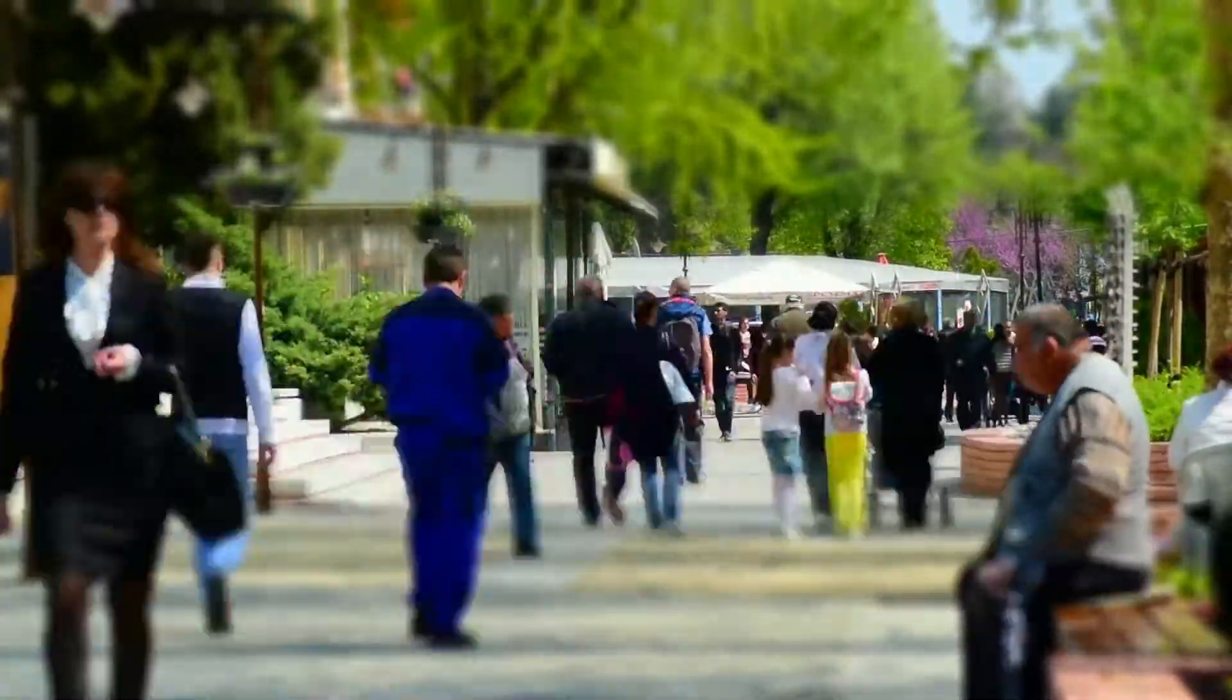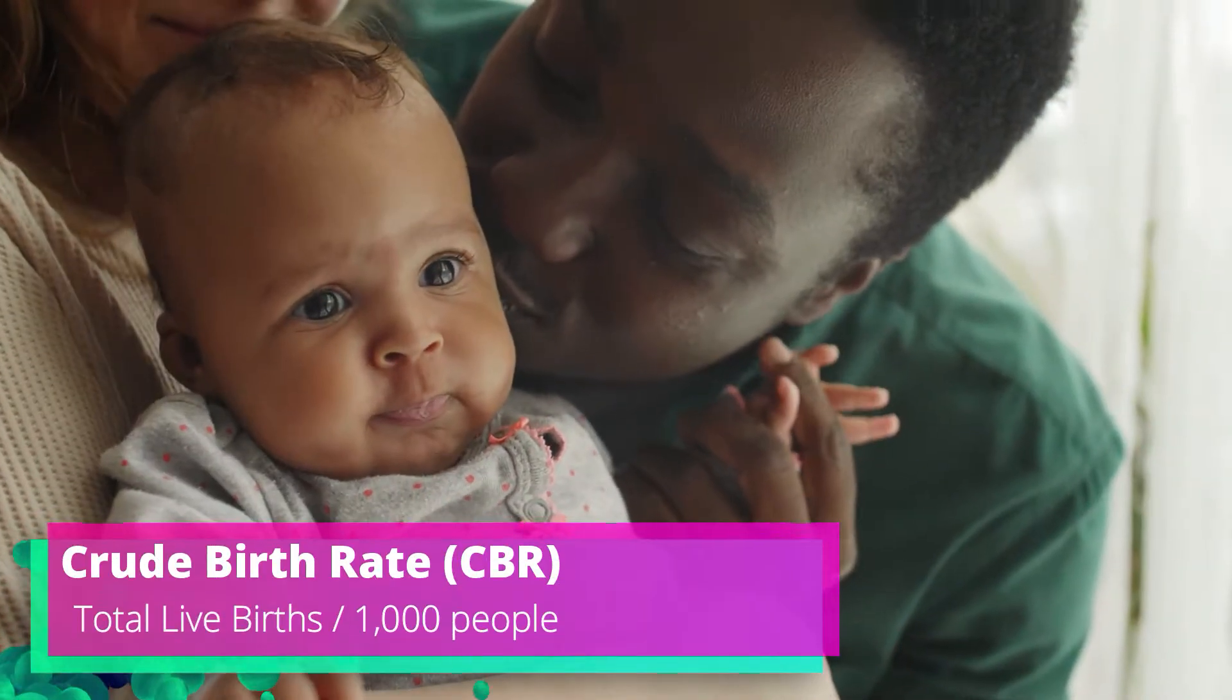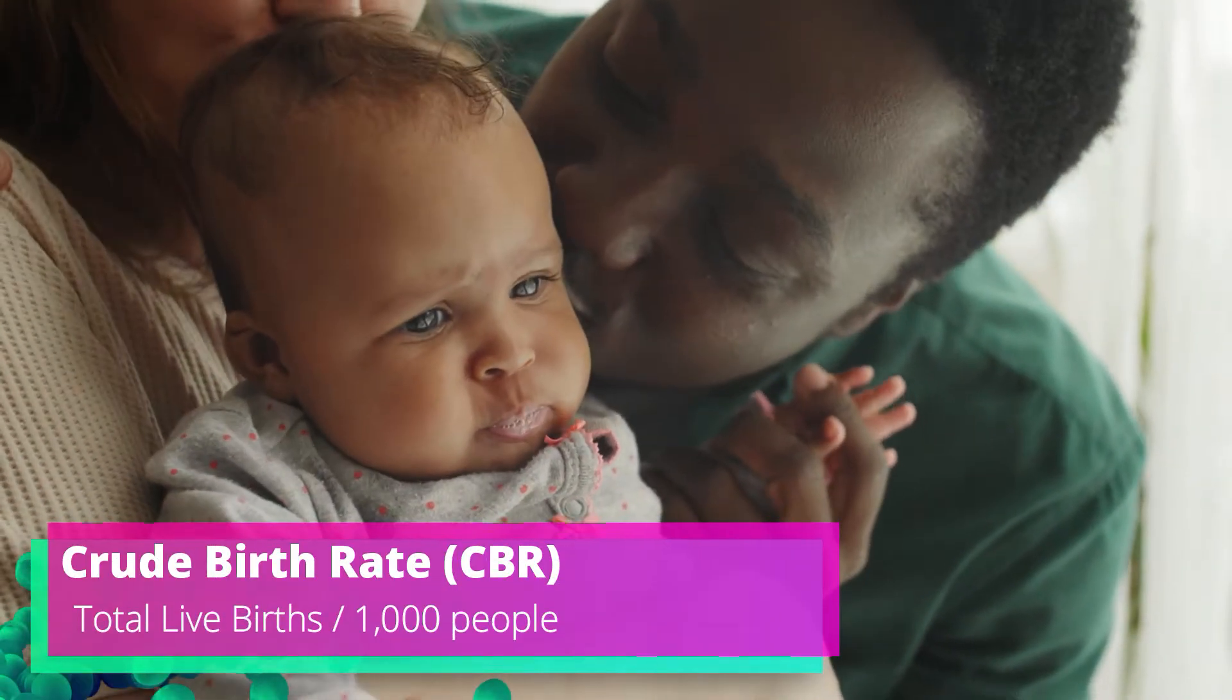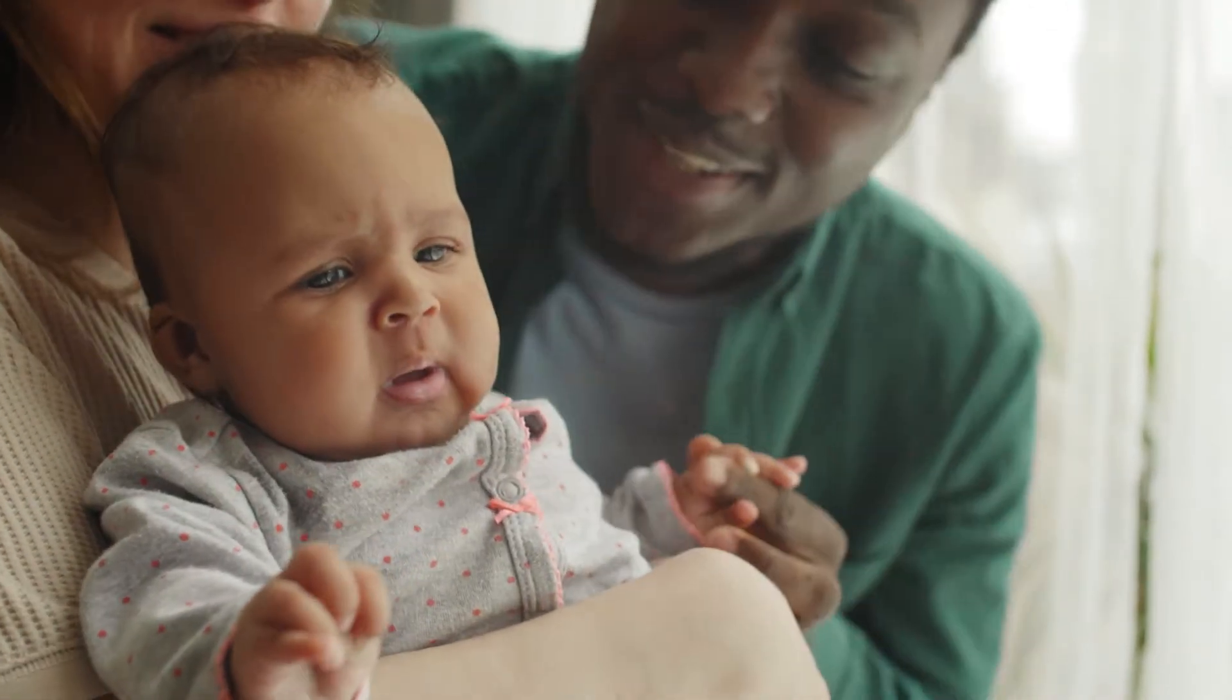The first term you're gonna have to know is crude birth rate, also known as the CBR. What this is looking at is just how many people are born in a given year. To find it what we're going to do is take the amount of live births in a year and divide it by a thousand people.